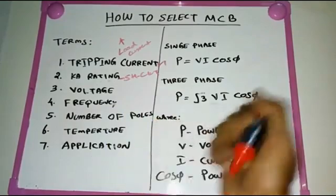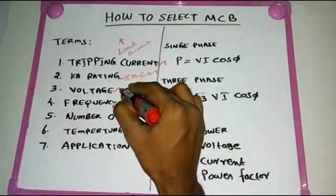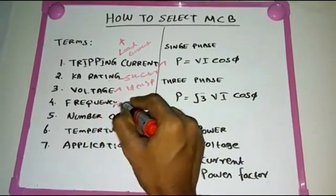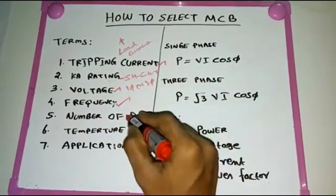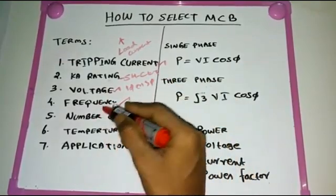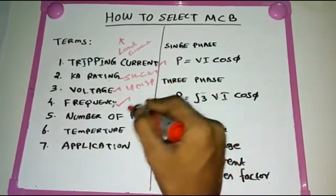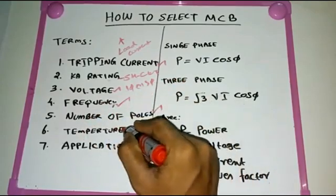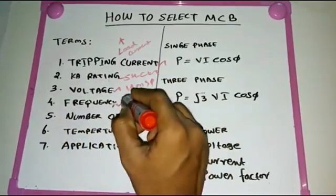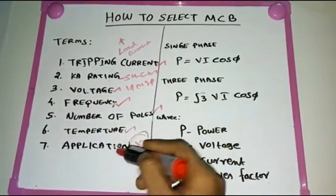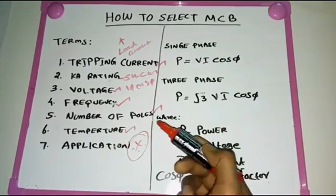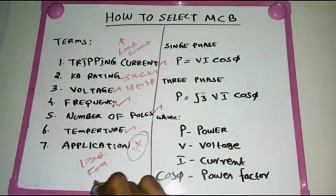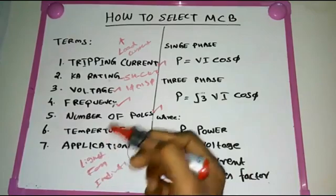Next are voltage, frequency, and number of poles, based on the phase you are using. For single phase: 230 volts. For three phase: 440 volts. Frequency is typically 50 Hz or 60 Hz depending on your location. The number of poles is based on whether you use single phase or three phase. Temperature is also important — whether you are in a cold area or hot area affects your MCB selection. The application — lighting, fan, air conditioner — is also very important.